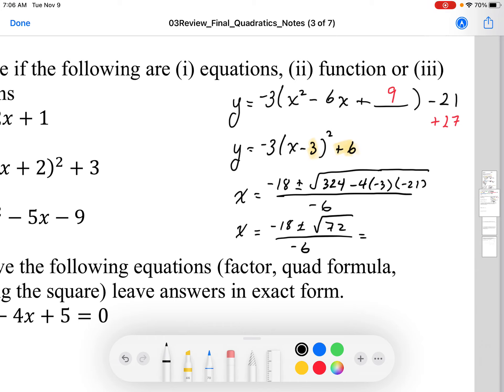Okay, so I can factor out a 6 out of there. So I end up with -18 ± 6√2, all over -6. Okay, and then down here it becomes -18 ÷ -6 is positive 3, plus minus becomes minus plus, which I'm just going to leave as ± √2.